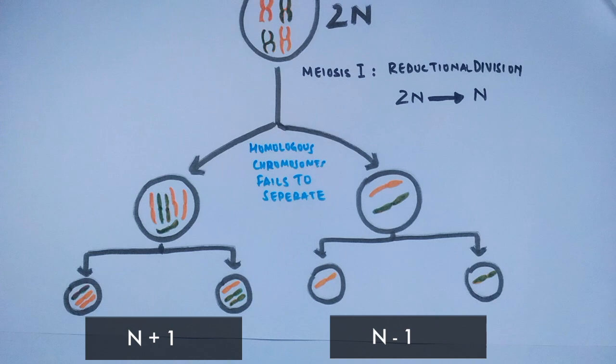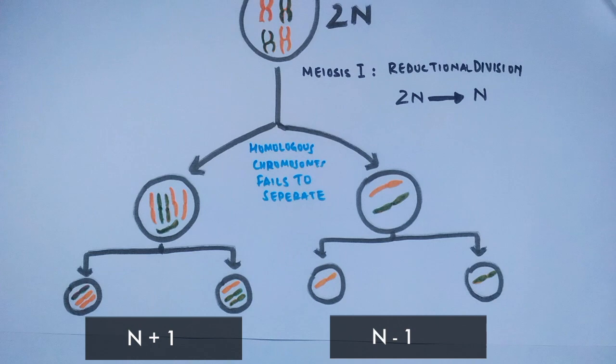This is how trisomy and monosomy occur during meiosis. That was all about Down syndrome. If you liked the video, give it a thumbs up, consider supporting the work on Patreon, and make sure to subscribe. Thanks.